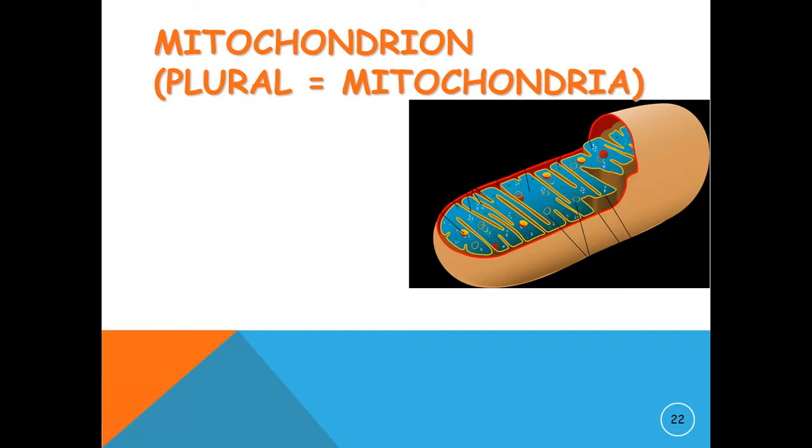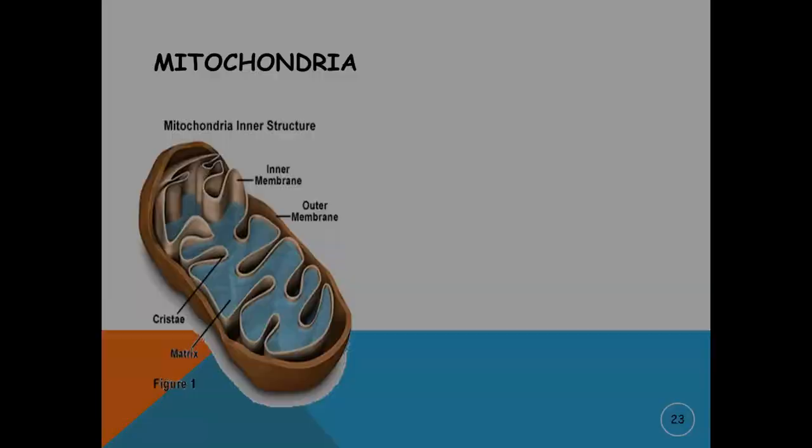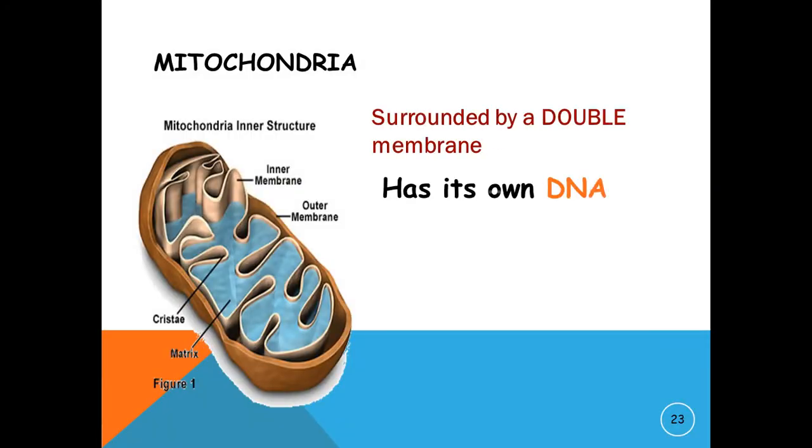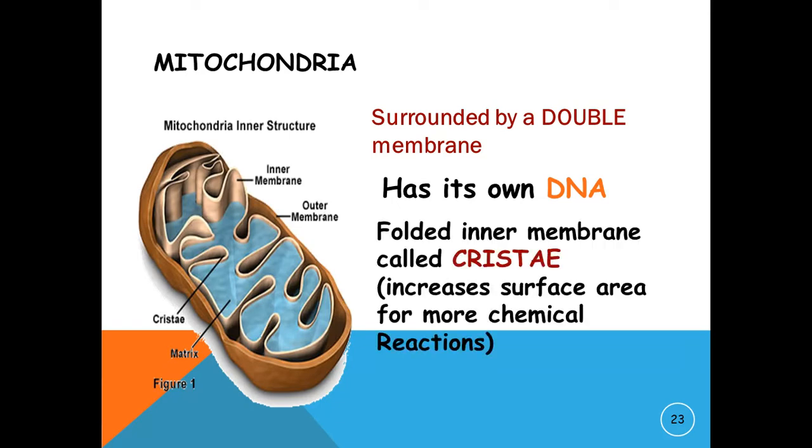Mitochondria is a membrane-bound organelle found in the cytoplasm of eukaryotic cells. It is the powerhouse of the cell. It is responsible for cellular respiration and production of ATP in the cells.